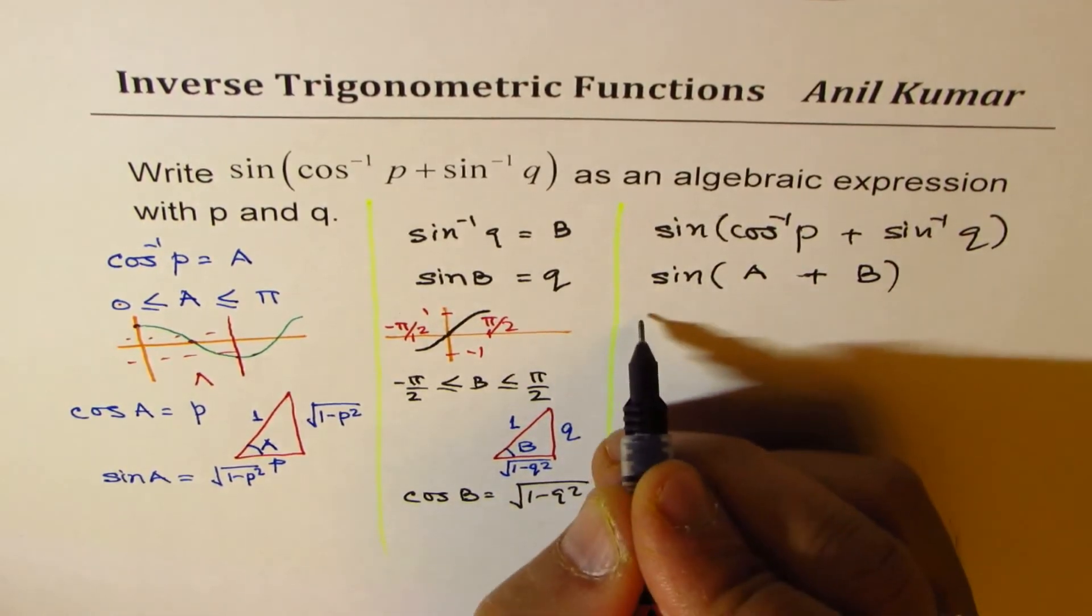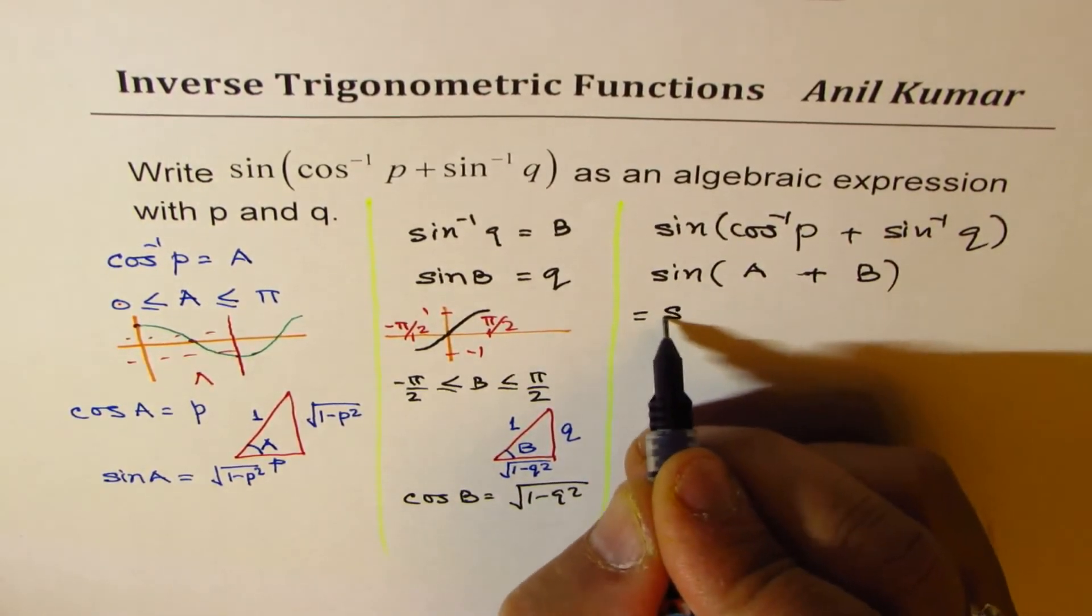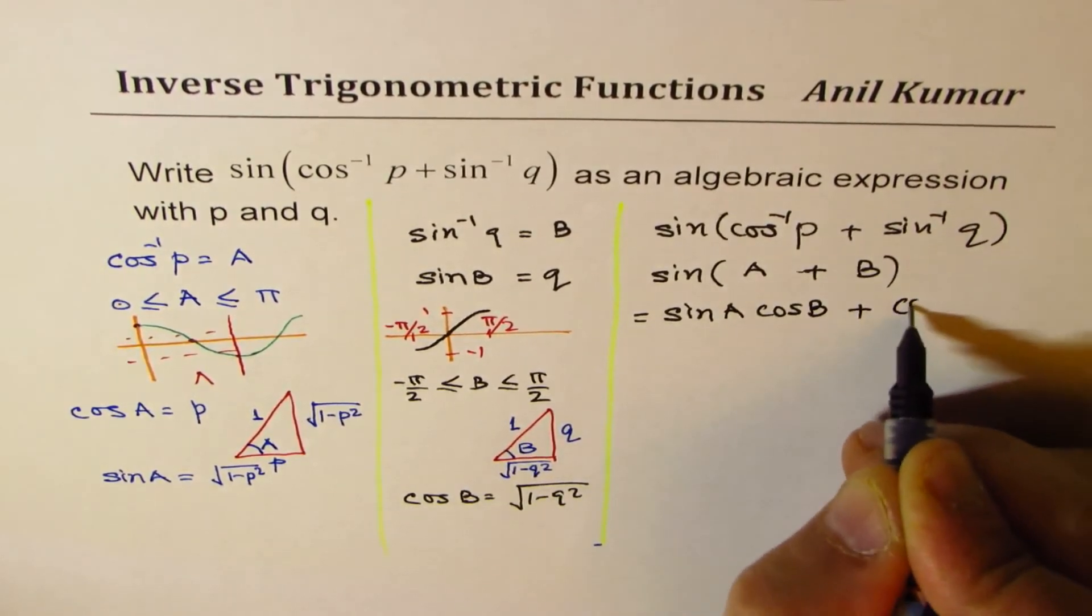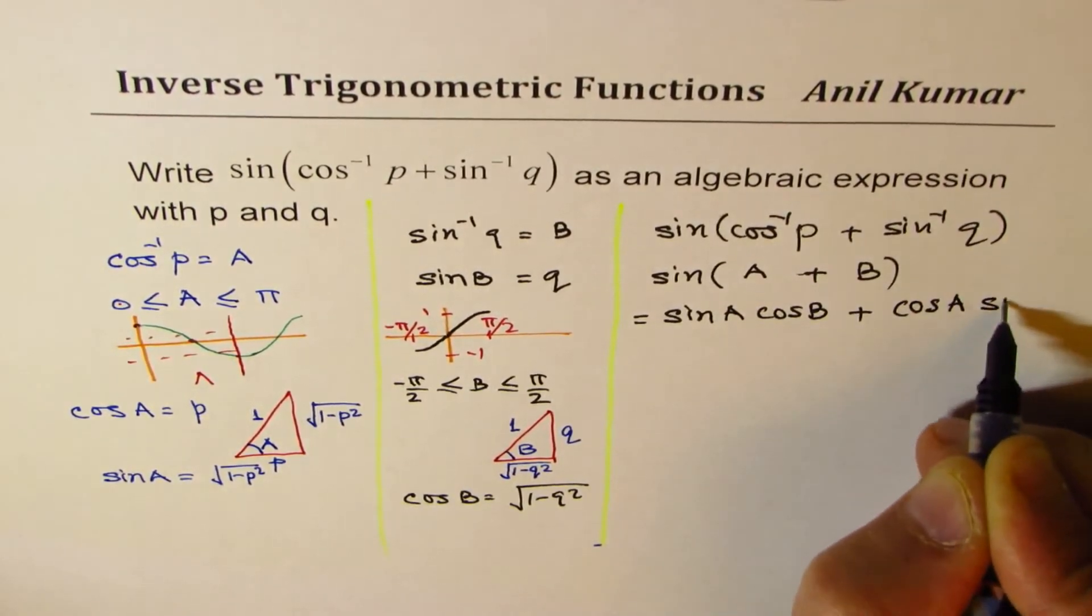We can expand this using the compound angle formula, which is sin A cos B plus cos A sin B.